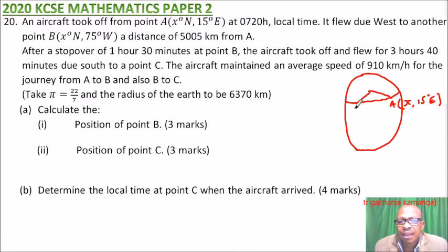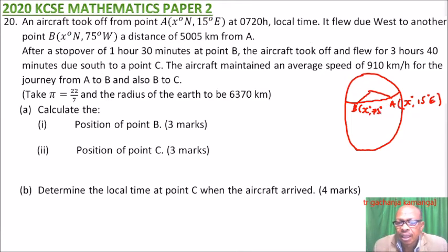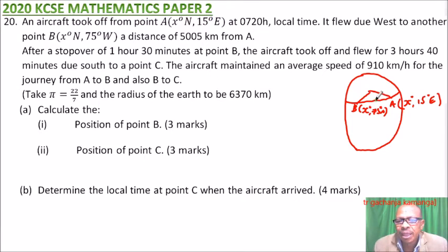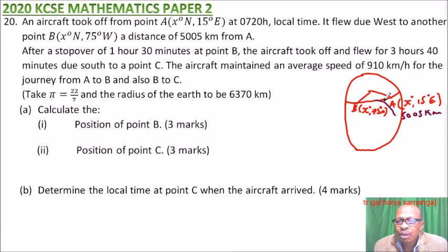Point B is at x degrees north, 75 degrees to the west. We are told the distance from A to B is 5,005 kilometers. Since A is to the east and B is to the west, to get the angle between A and B, we add 15 and 75 degrees, giving us 90 degrees.